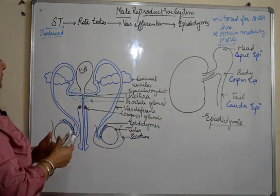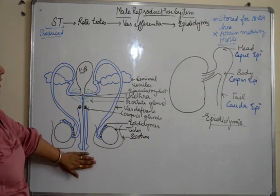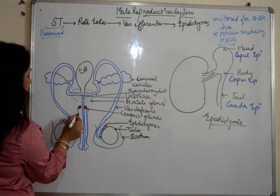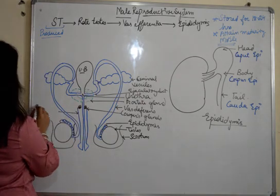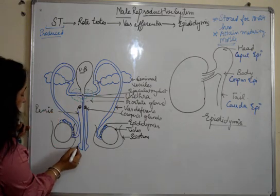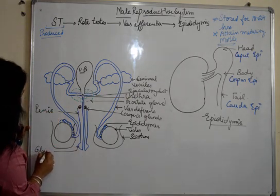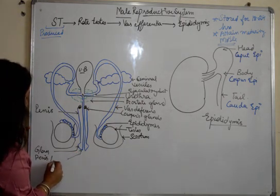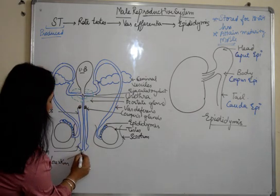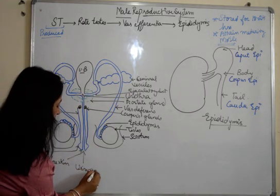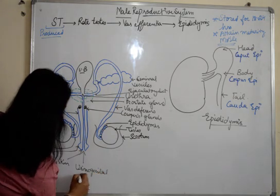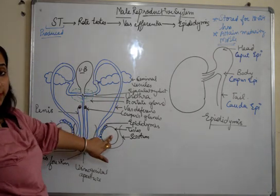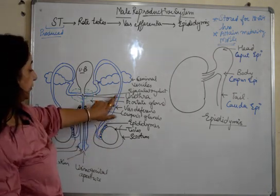So we have this male reproductive system with most parts labeled. The remaining labels are: this is the penis, this is the glans penis, this is the foreskin, and this is the urinogenital aperture. Now what happens: sperms are formed in the testes, stored in the epididymis, and move in the vas deferens.